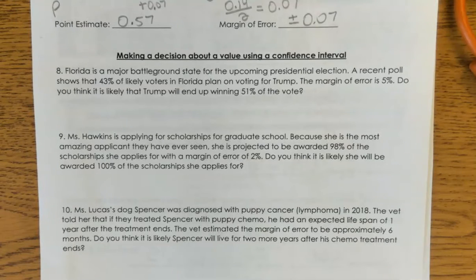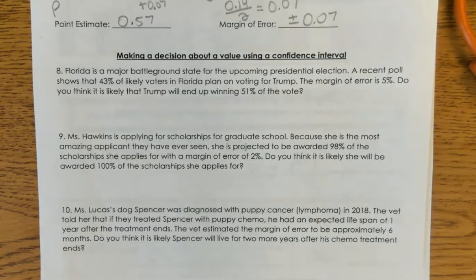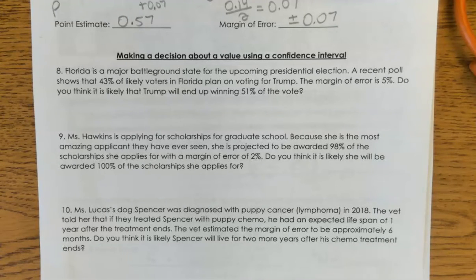Next up, we're going to talk about making a decision about a value when you actually have a confidence interval. The whole point of confidence intervals is to let us know what the estimate of the value is so we can make a decision. Number 8: Florida is a major battleground state for the upcoming presidential election. A recent poll shows that 43% of likely voters in Florida plan on voting for Trump. The margin of error is 5%. Do you think it's likely that Trump will end up winning 51% of the vote?